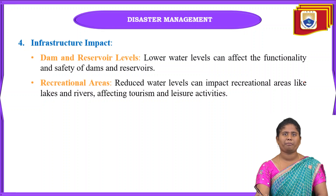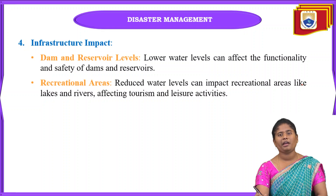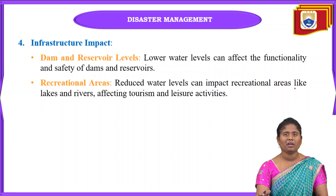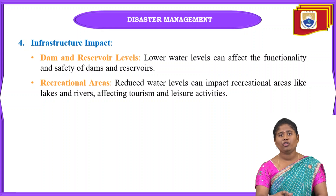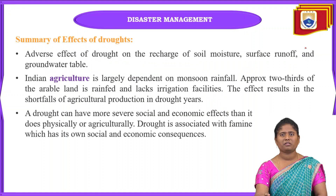Infrastructure is also impacted by droughts. Dam and reservoir levels drop significantly, affecting the functionality and safety of these water bodies. Recreational areas suffer as well, with loss of tourism and leisure activities due to reduced water levels in lakes and rivers.